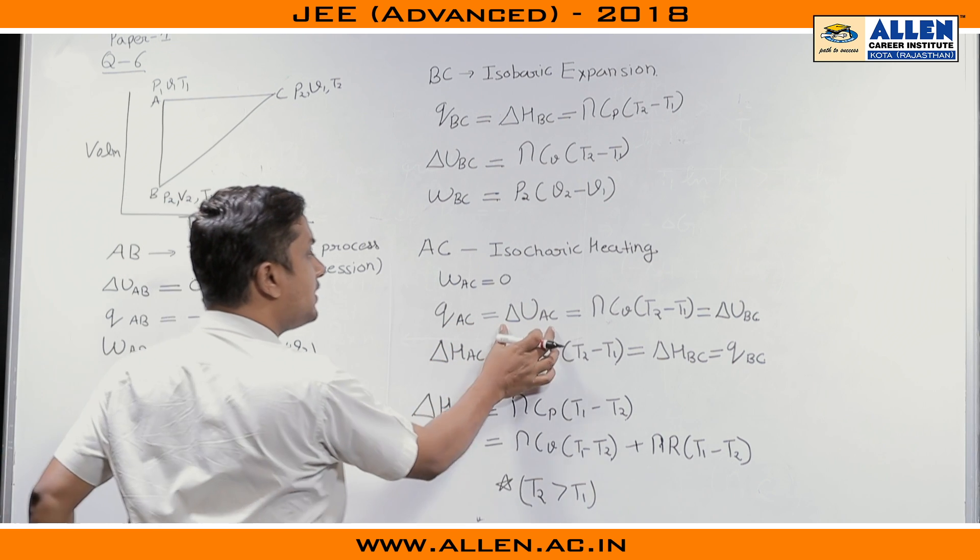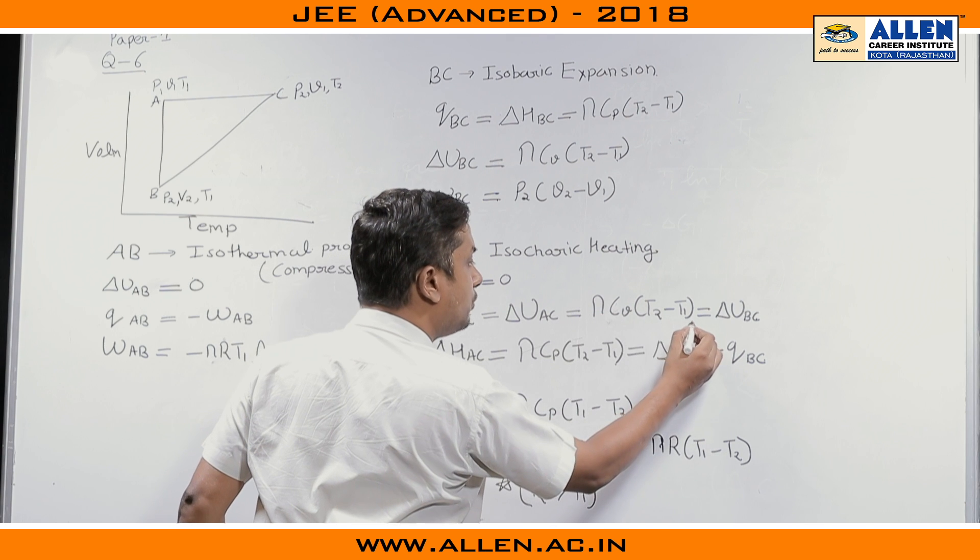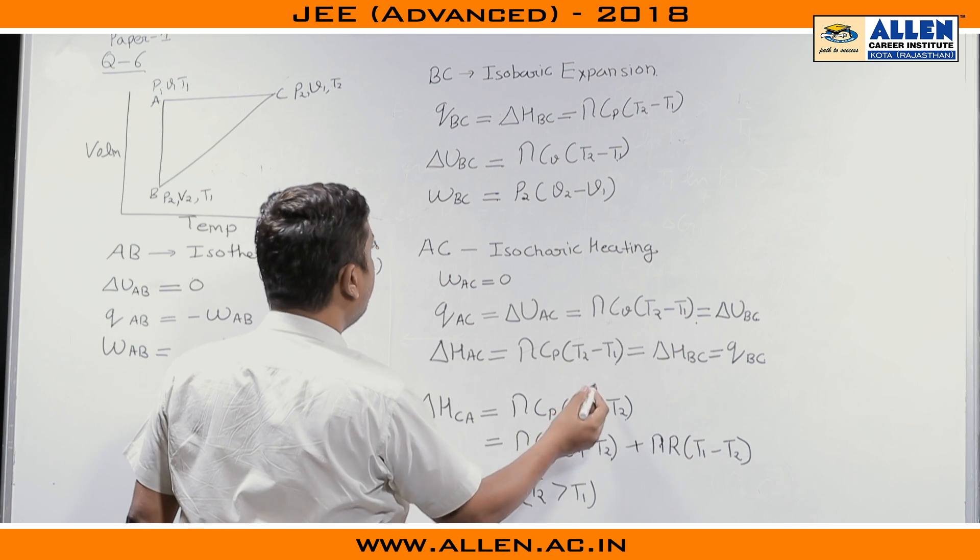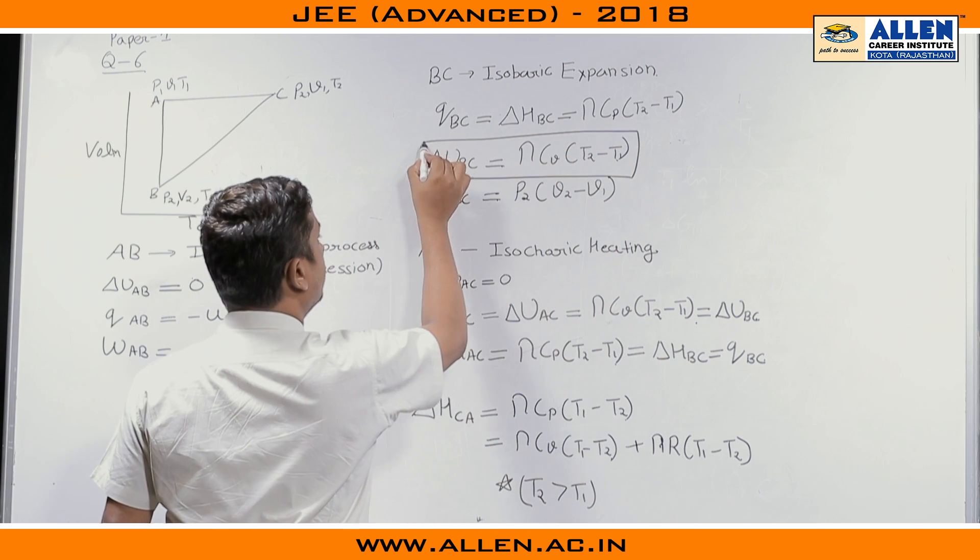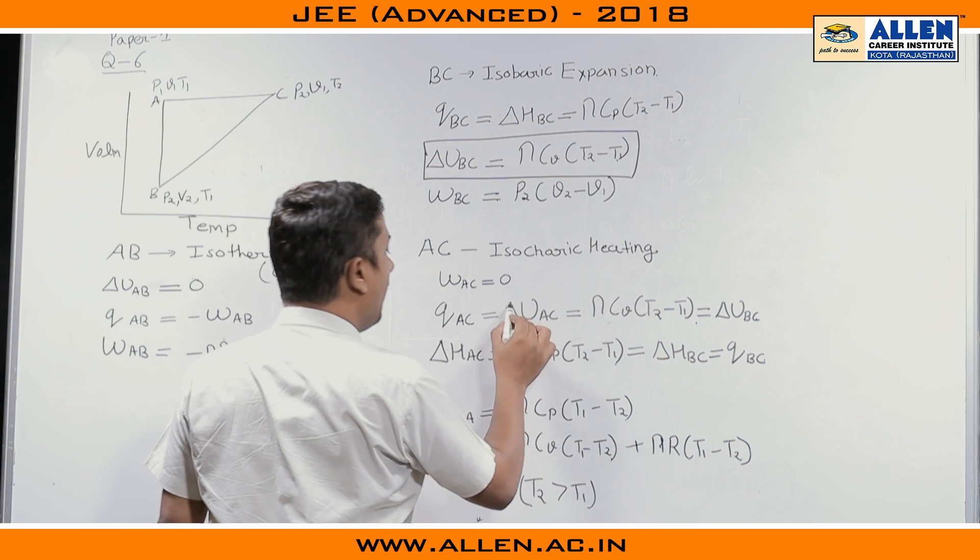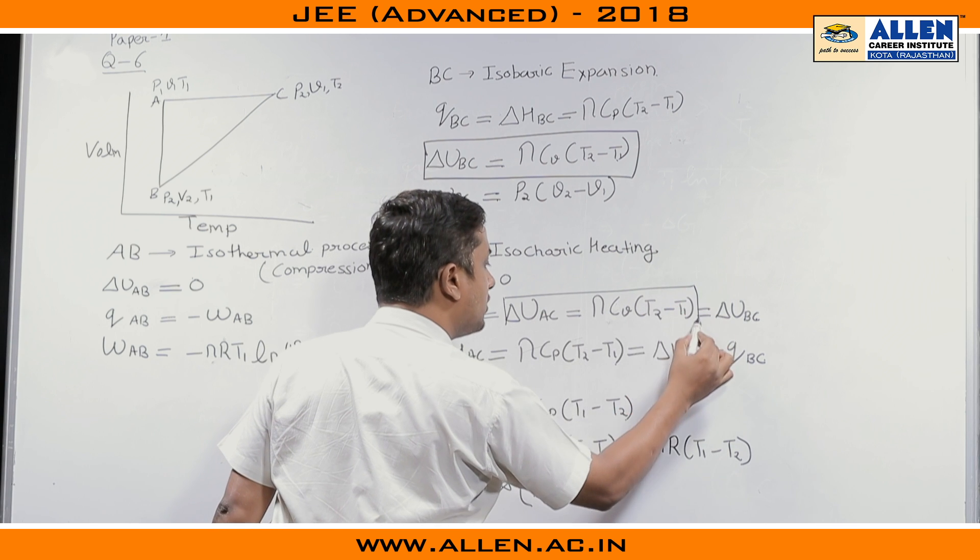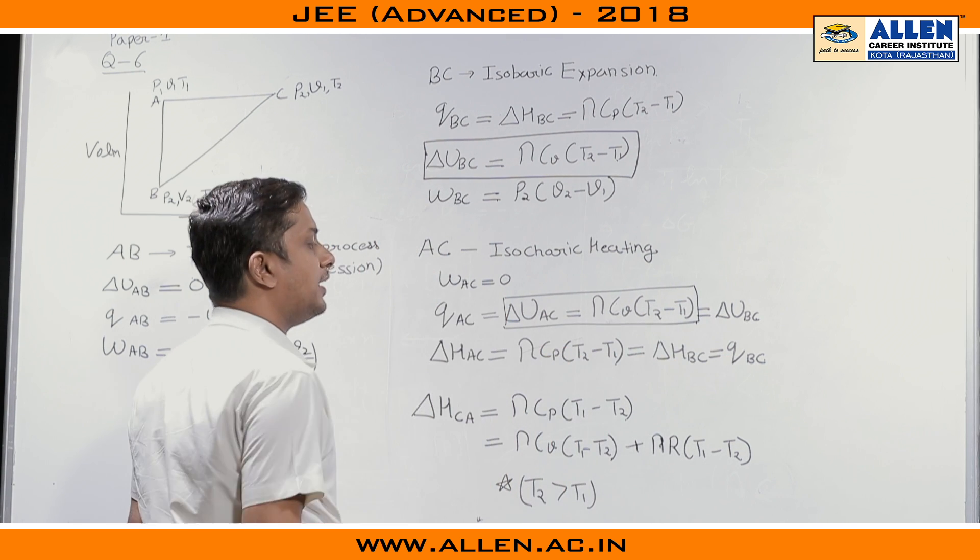Now, delta U_AC can be written as nC_V(T₂ minus T₁) and if we check then this delta U_BC is also nC_V(T₂ minus T₁) and delta U_AC is also nC_V(T₂ minus T₁).